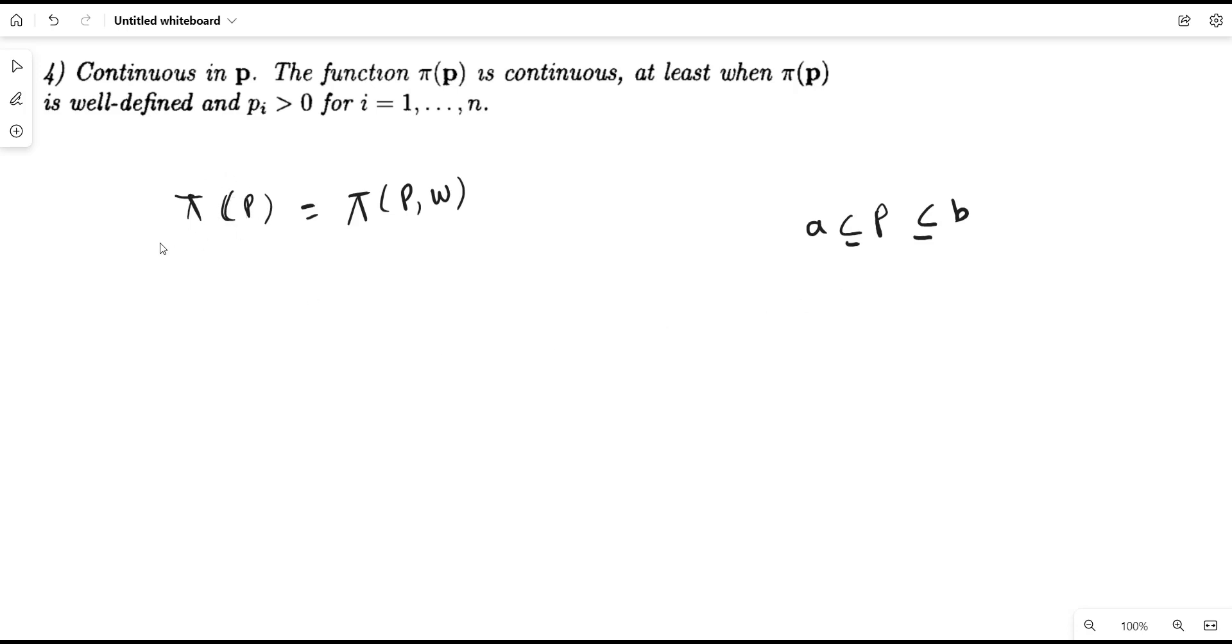This differentiability will help us to discuss Hotelling's Lemma to derive the supply function and factor demand function of the firm from the profit function.